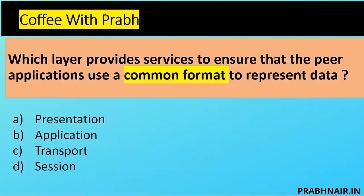First interesting question: which layer provides services to ensure that peer applications use a common format to represent the data? The options are: Presentation Layer, Application Layer, Transport Layer, and Session Layer — these are layers of the OSI model.